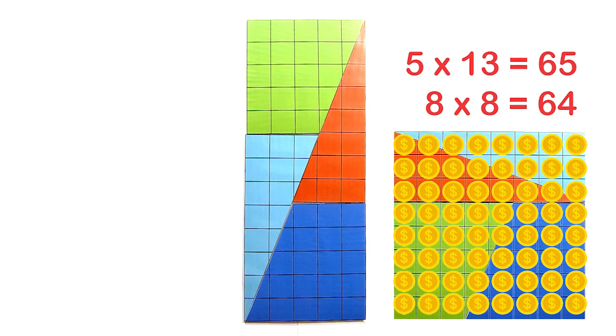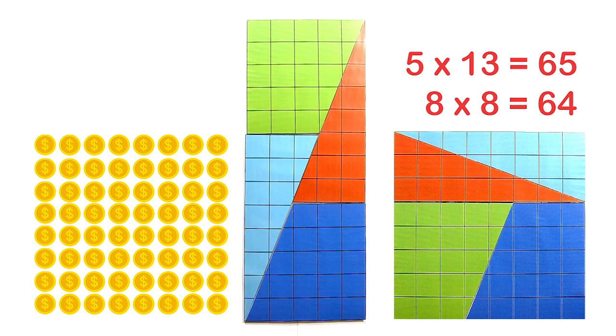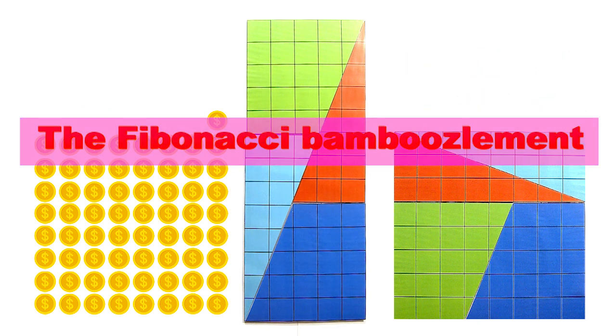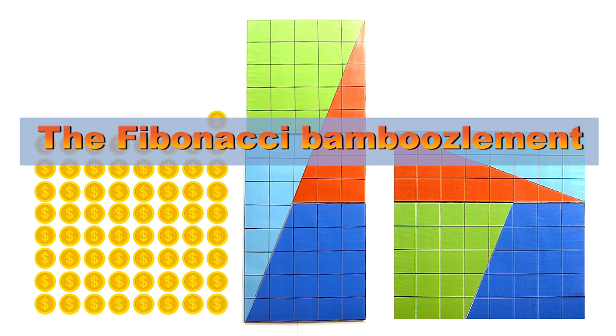If I could do that with gold, I would have created one small box of gold, so I would be an extremely wealthy man. Obviously, I can't do that. I have bamboozled you. That's why it's called the Fibonacci bamboozlement.